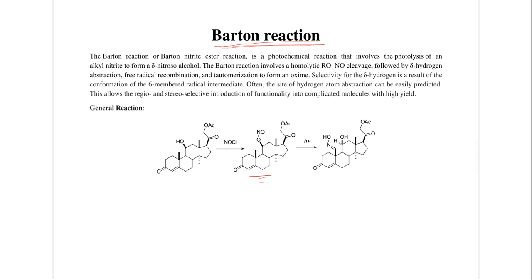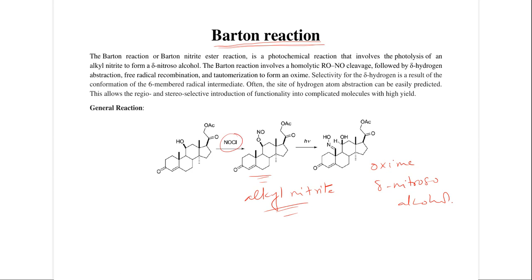This is alkyl nitrite. Alkyl nitrites are converted into oxime or nitroso alcohol. How is this alkyl nitrite produced from alcohol? By reacting alcohol with nitrosyl chloride, it is converted into alkyl nitrite. Then this alkyl nitrite is exposed to light, and upon homolytic cleavage, by following a radical mechanism, it is converted into oxime, which is the final product of this reaction.